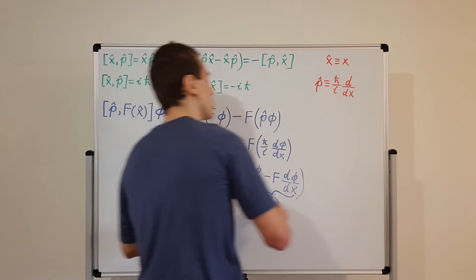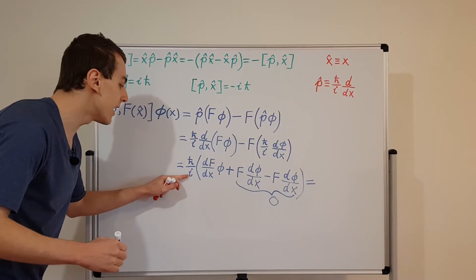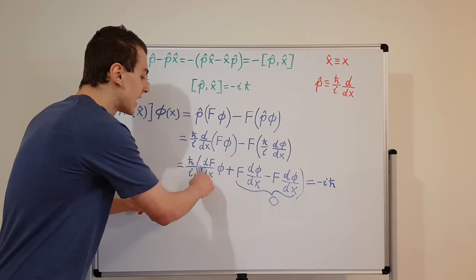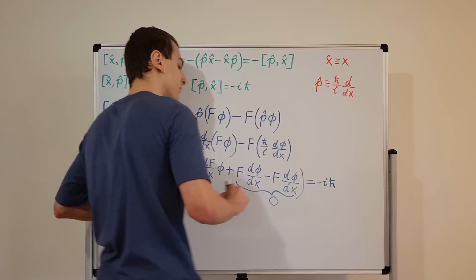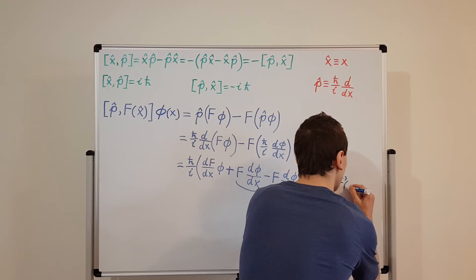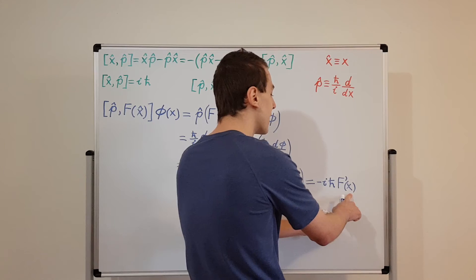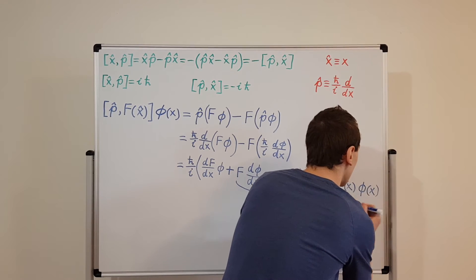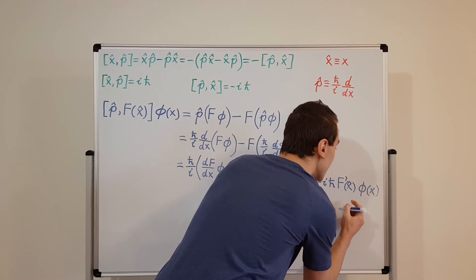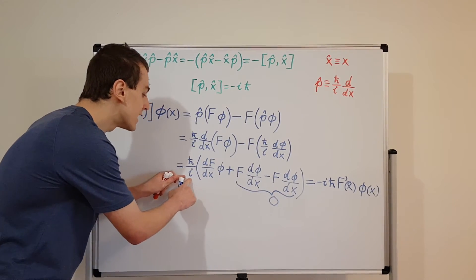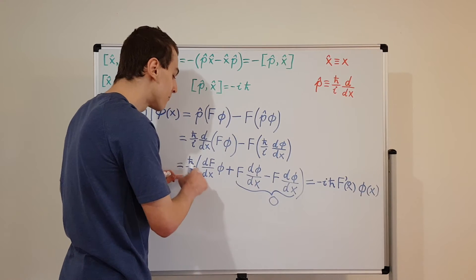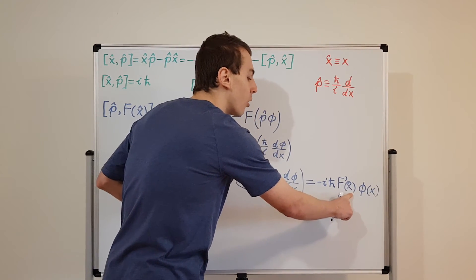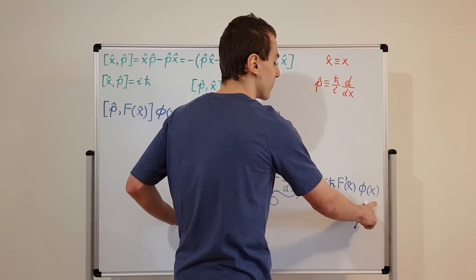Writing this in a slightly different way: moving the i up to the numerator turns ℏ/i into minus iℏ. Using prime notation for the derivative, the result is minus iℏ times F'(x̂) acting on phi of x, where the prime denotes differentiation with respect to x. The i has become minus i, we still have ℏ, and the derivative of F is written in prime notation, with it specified as a function of the position operator acting on the test function phi.